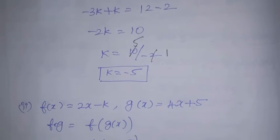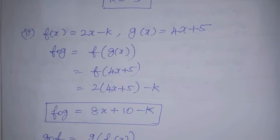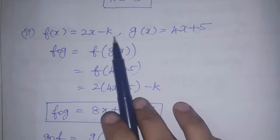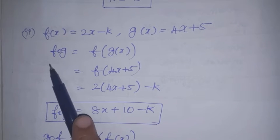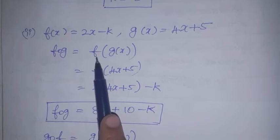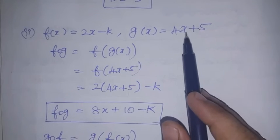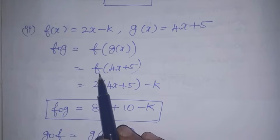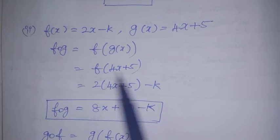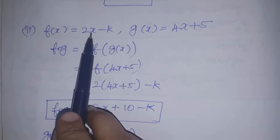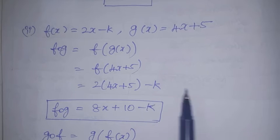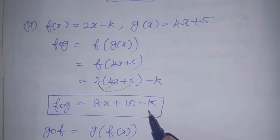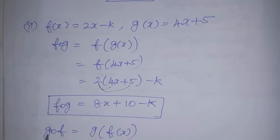Next is the second subdivision. f(x) = 2x - k and g(x) = 4x + 5. We find f∘g: f of g(x) = f(4x + 5). Substituting into f(x) = 2x - k: 2 × (4x + 5) - k. Multiplying: 2 × 4 = 8x, 2 × 5 = 10. So f∘g = 8x + 10 - k.